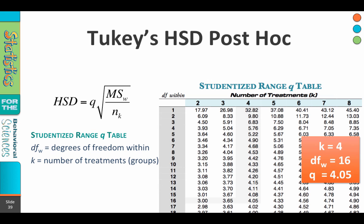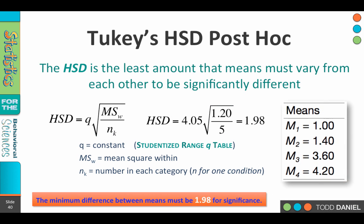We then need to plug that in with the mean square within and N sub K. This will give us the Honestly Significant Difference, or HSD, which is the least amount that the means must vary from each other in order for them to be statistically significantly different.